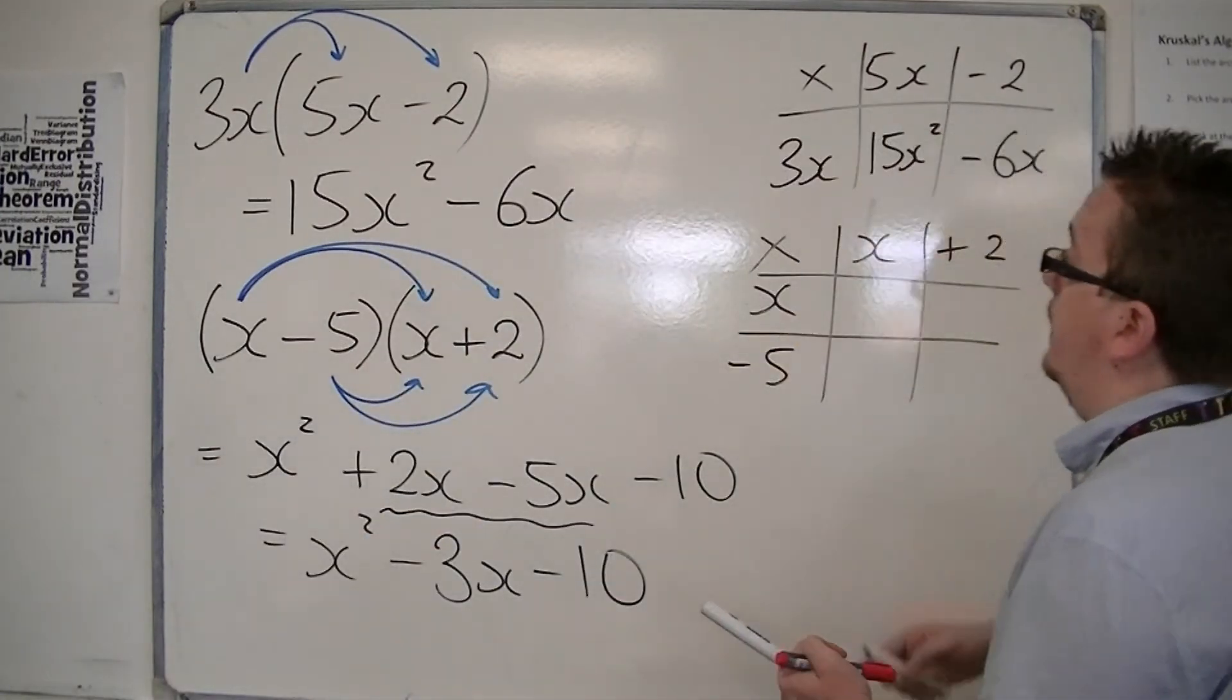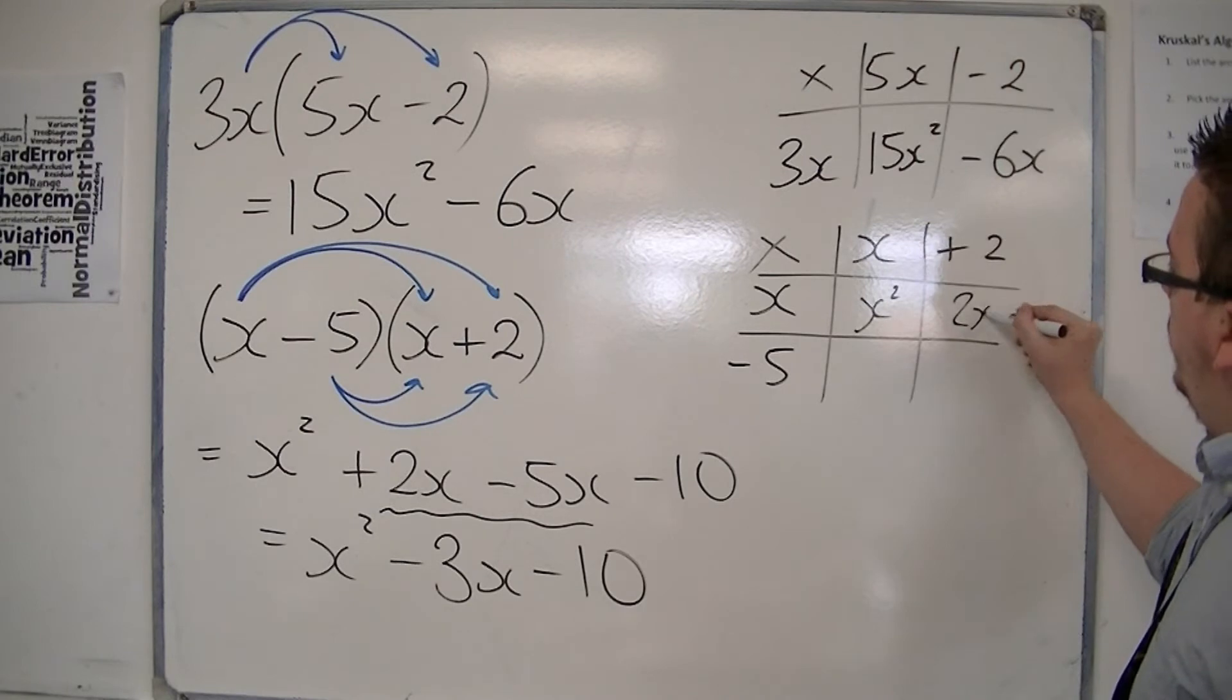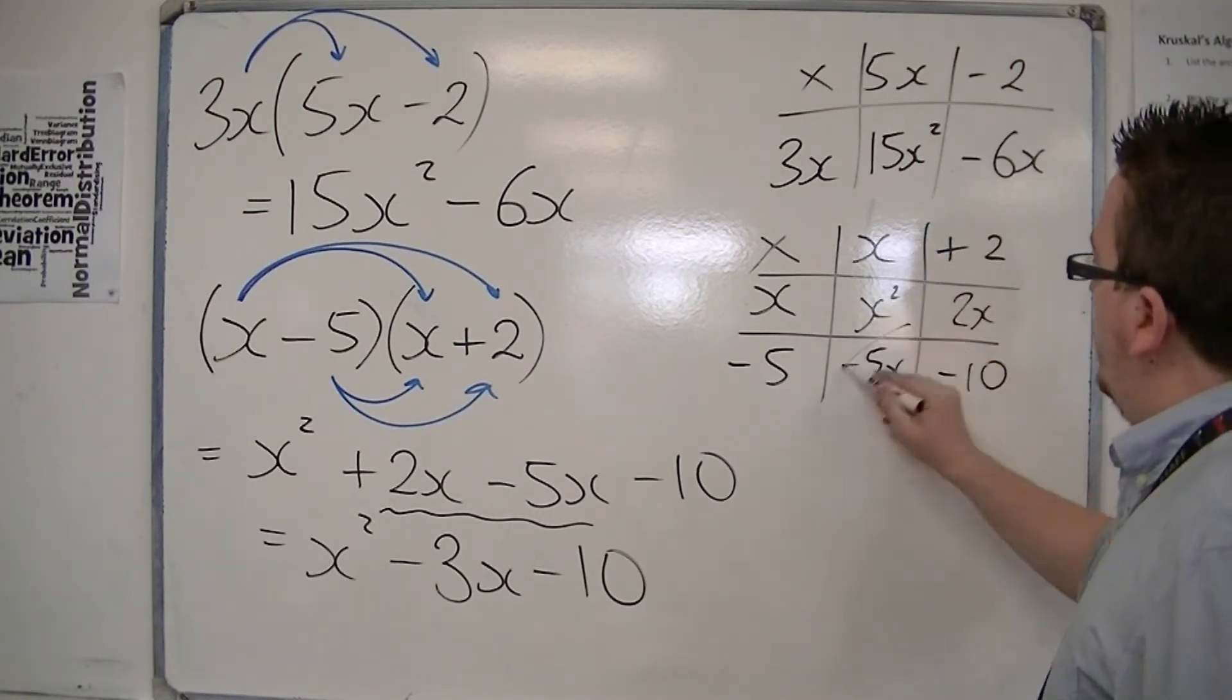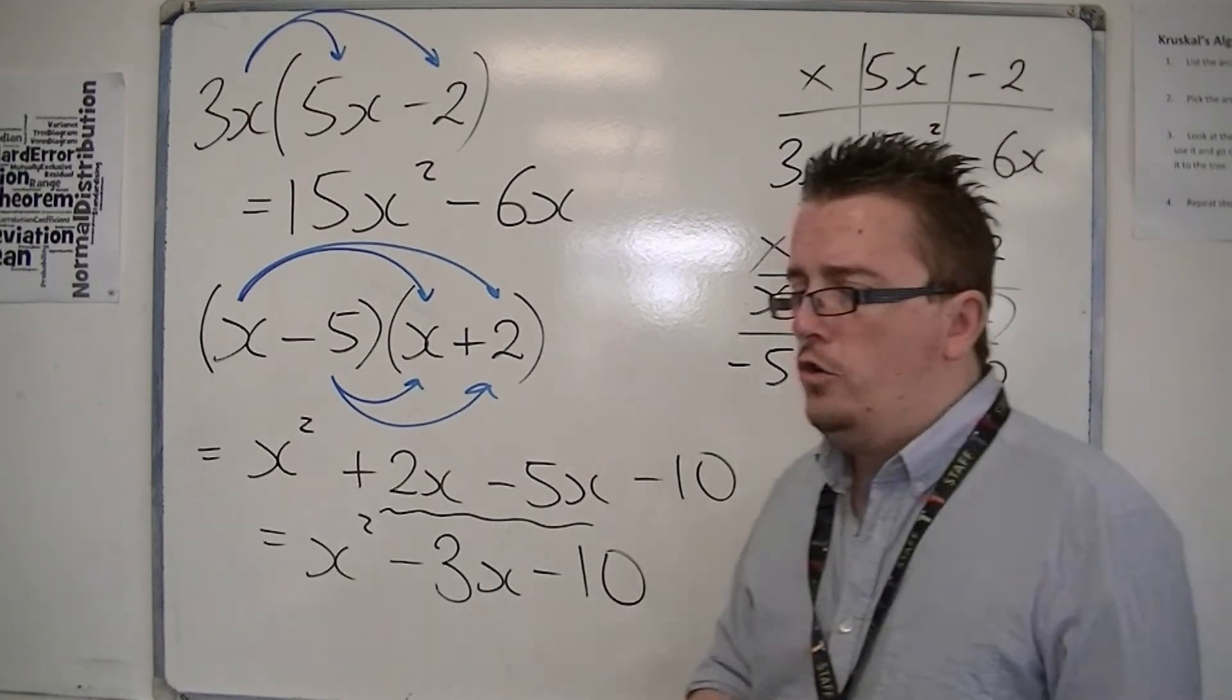You'd have exactly the same thing on the grid: x squared, 2x, minus 5x, and minus 10. You just need to combine those two terms. No real problems there.